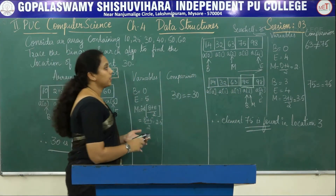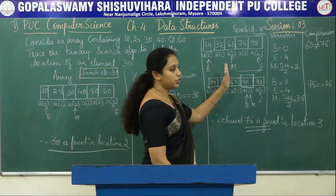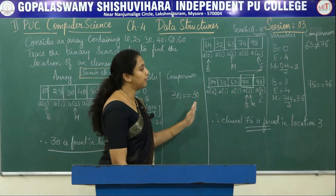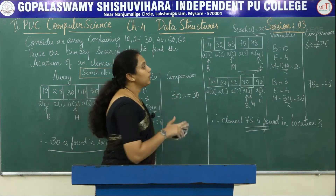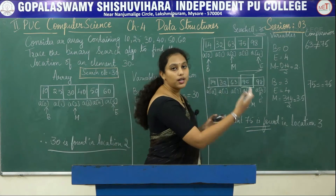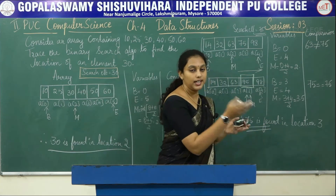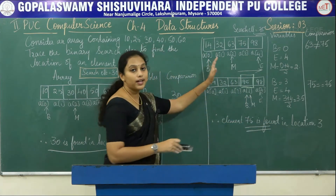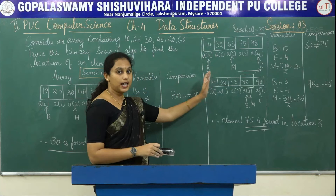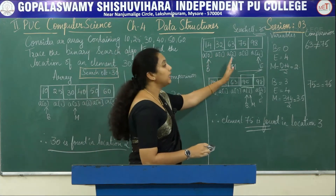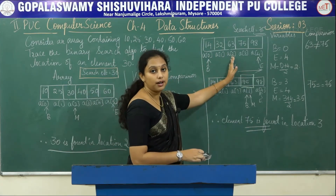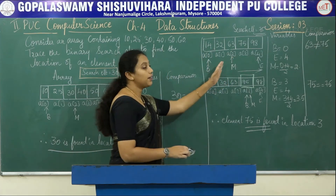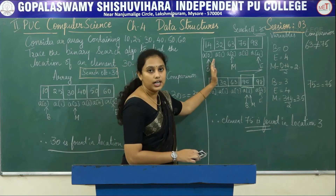If the search element is greater than the middle element, we go towards the right side of the array. If the search element value is less than the middle element value, then we go towards the left side of the array.